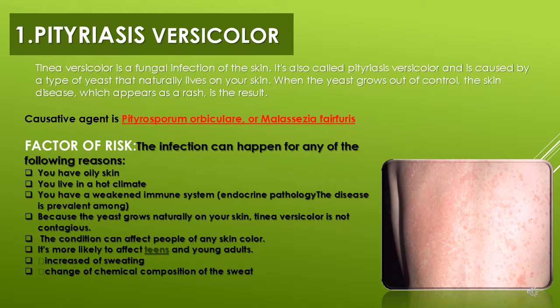Pityriasis versicolor is also called tinea versicolor. It is caused by a type of yeast that naturally lives on your skin, but when the environment changes, it can cause rashes. The causative agent is Pityrosporum orbiculare, or Malassezia furfur. The risk factors include oily skin, living in hot weather, and having a weak immune system. It can affect any race or age, but is more prominent in teenagers and adults. Increased sweating, due to changes in the chemical composition of sweat, can also lead to the disease.